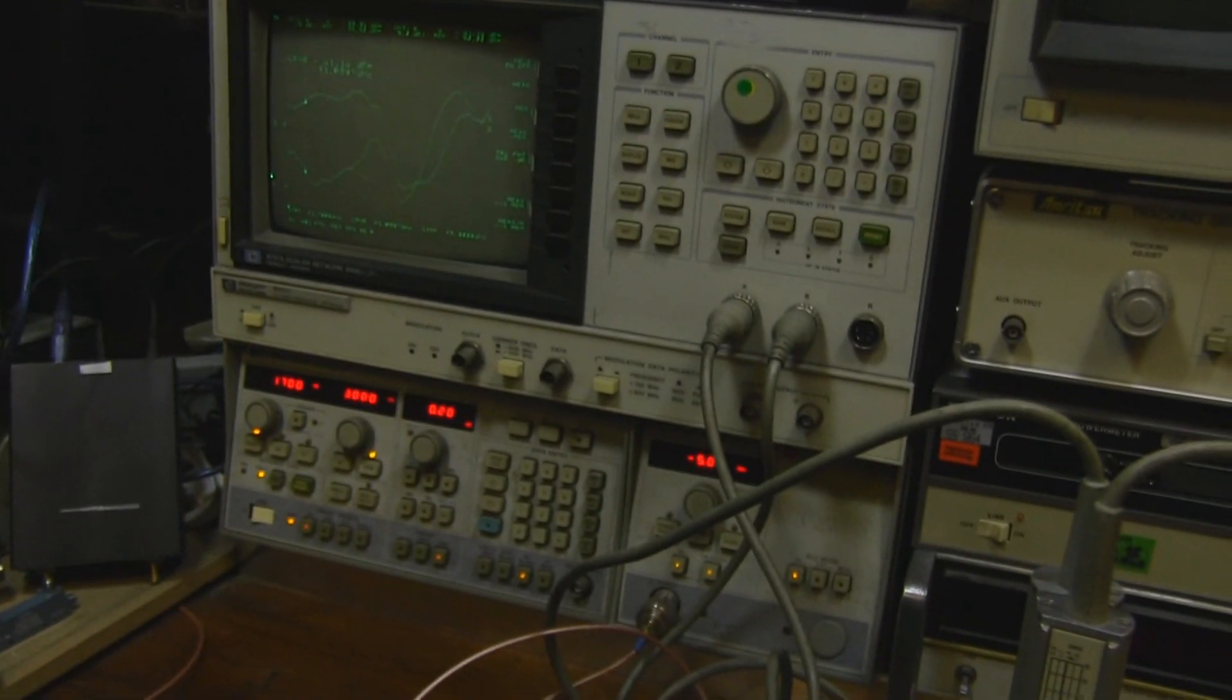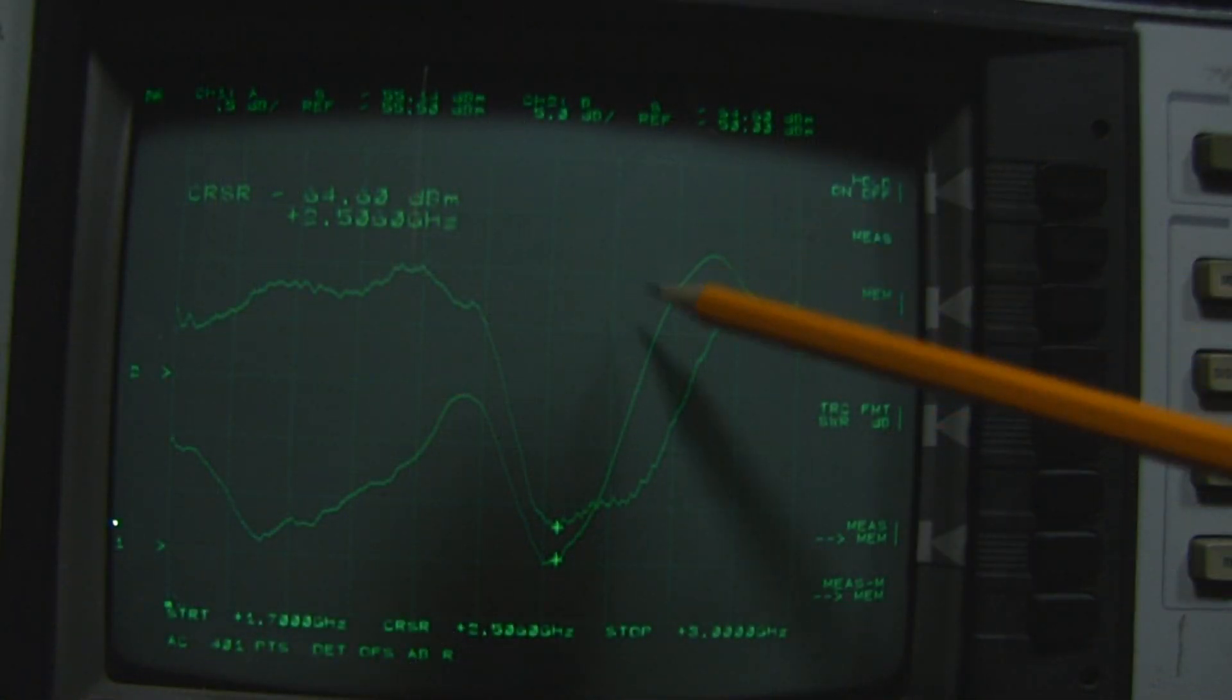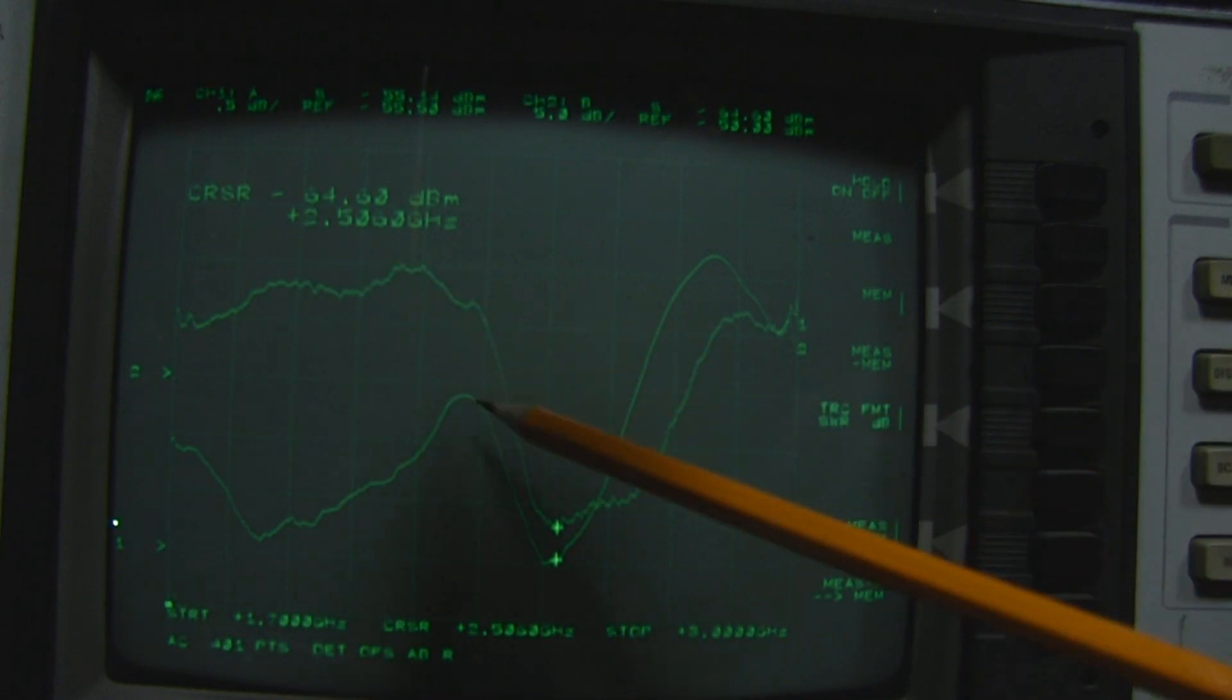So here we are on the network analyzer. You can see the two traces. We've got trace number one here, a beautiful dip for the 2.4 gigahertz WiFi. We've got the second trace, trace number two, again a very nice dip but not quite as wide. The cursor is on 2.5 gigahertz there, 2.42.45 gigahertz there.